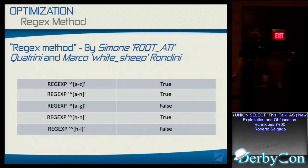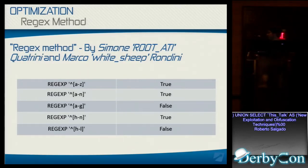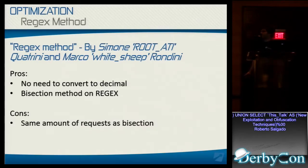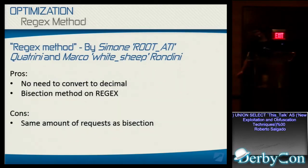The regex method, by Simon and White Sheep, is essentially an adaptation of the bisection method. It has the same logic but uses regular expressions instead. One of the pros is you don't necessarily have to convert to decimal — you can put the characters right in there, so if you're doing this exploitation manually it might be a bit easier. But it's exactly the same number of requests as the bisection method.